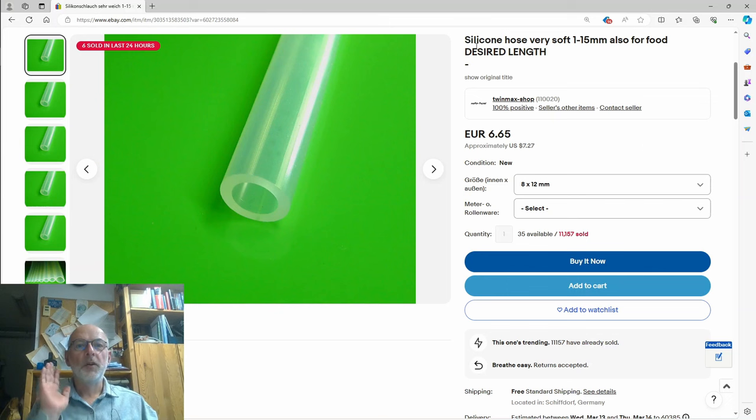Here's the eBay listing, so silicon hose very soft also for food, I don't care, from a Twin Max shop. Eight by 12 millimeters and I got a single meter and that was €6.65 with free shipping.